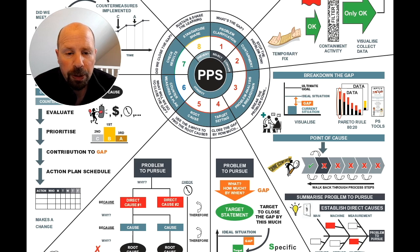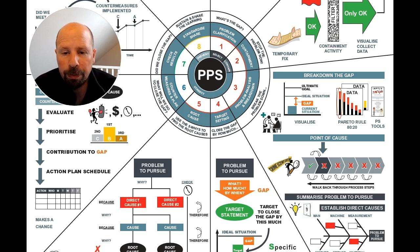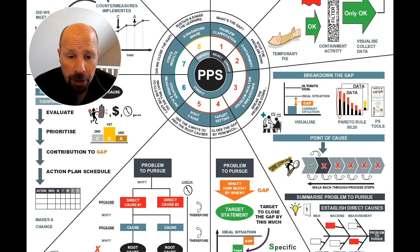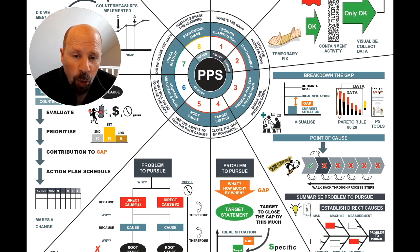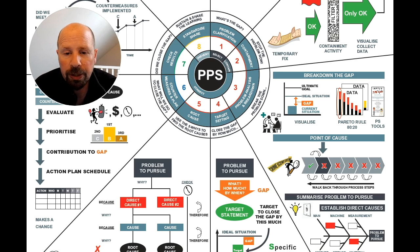Next is finding the point of cause. We find this to understand where and when our problem really happens. You must do this through go-see on the real situation, just like a crime scene investigator. Work back through the process steps to try to focus the activity on a specific point where the problem starts.